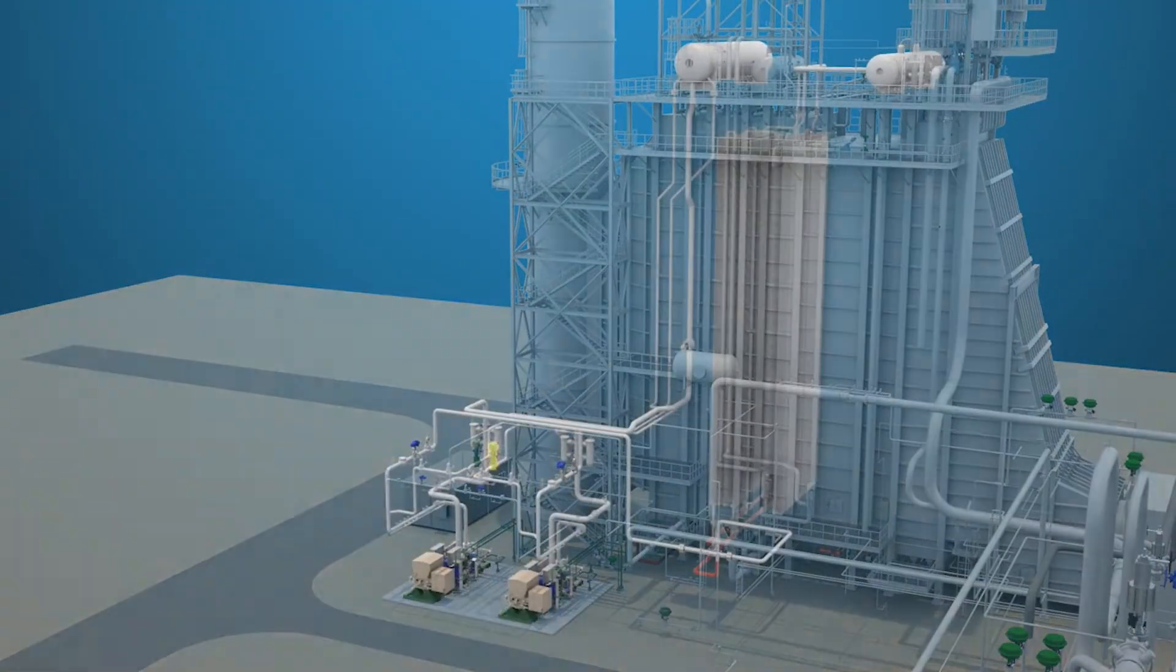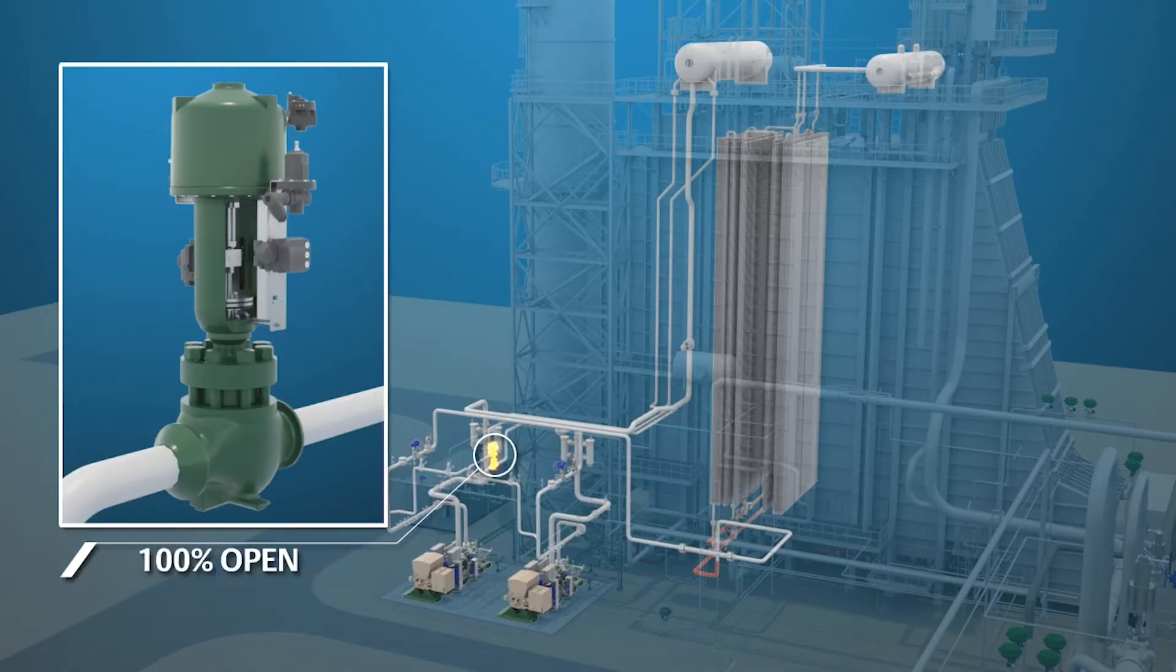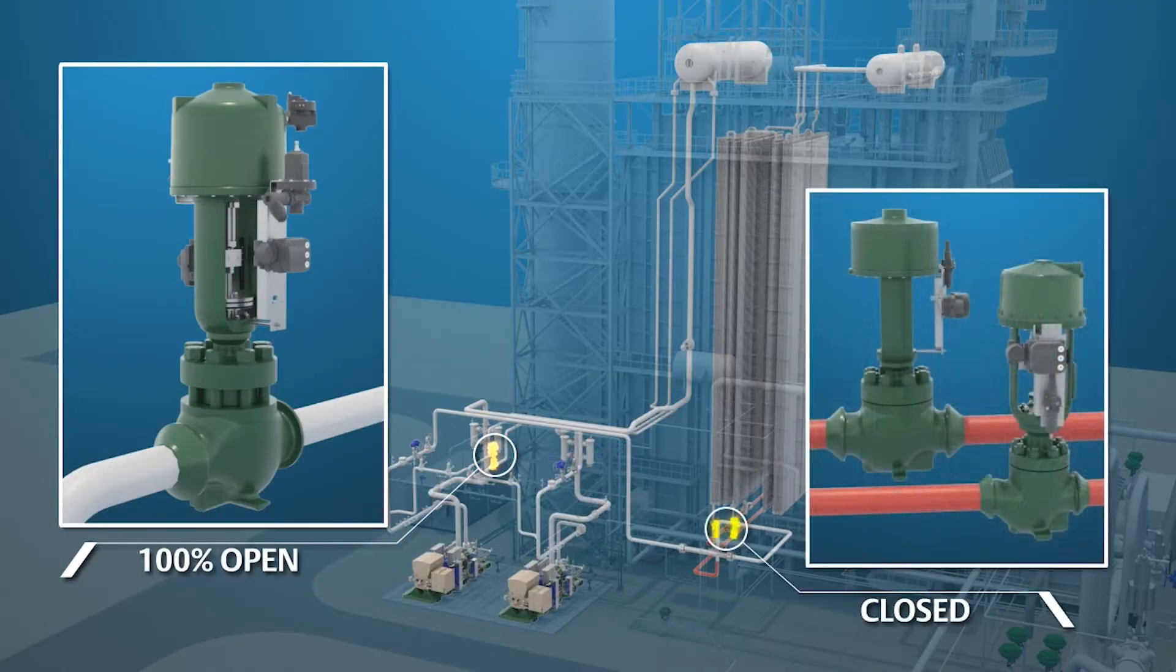To start the pump, the recirculation valve should be 100% open and the downstream feed water regulating valves closed. Once the pump is started, a minimum flow rate as determined by the pump manufacturer will be established through the boiler feed pump recirculation valve to keep the pump cool.